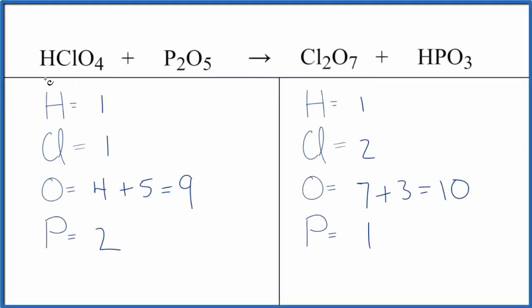Let's balance the equation for HClO4 plus P2O5. This is perchloric acid. This is diphosphorus pentoxide. Usually this exists as P4O10 and then this is an empirical formula, but I was asked to balance this equation, so let's do it.